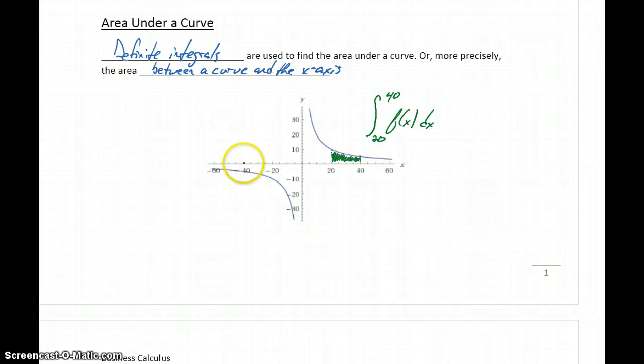Or similarly, if we were looking at values from negative 40 to negative 20, we would again be looking at values between our curve and the x-axis. So we'd be looking to find the area of this shaded region, which in this case would be the integral of f of x dx, with a lower bound of negative 40, and an upper bound of negative 20.